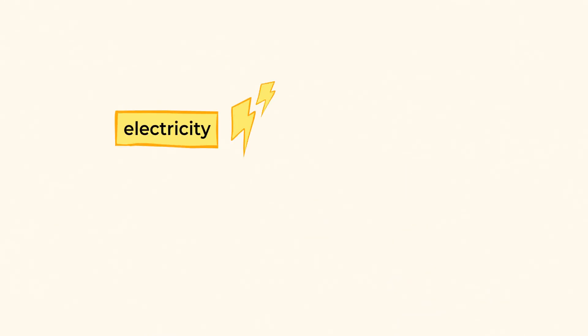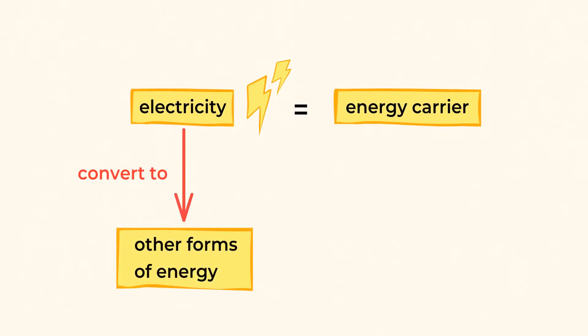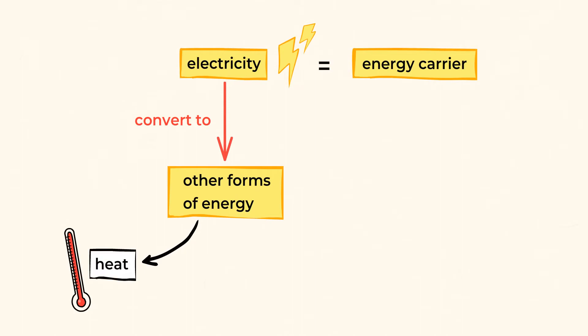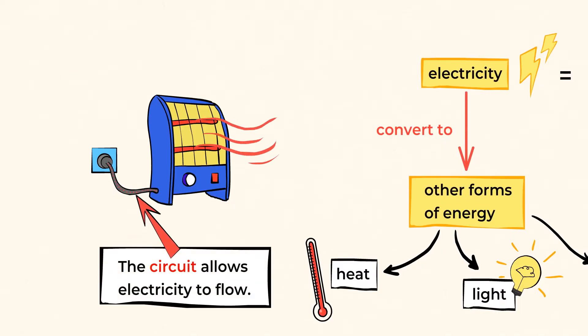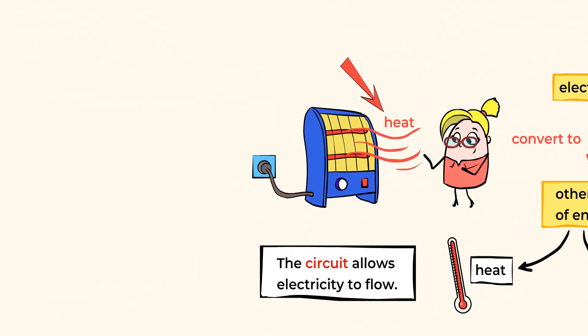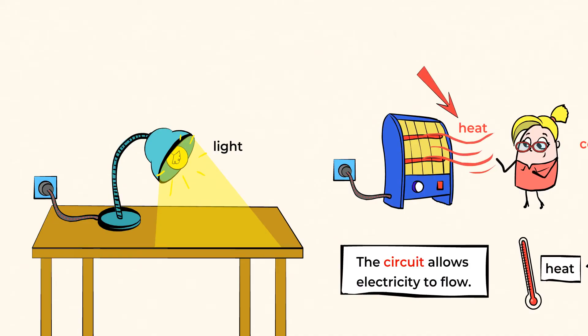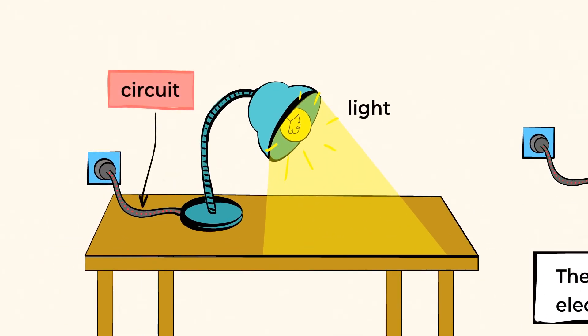Electricity is also known as an energy carrier, which means it can be converted to other forms of energy, such as heat, light, and even sound. For example, once you plug in your electrical heater and turn it on, you create a circuit which allows electricity to flow, and then you get heat as a result. Or maybe you plug in your lamp and turn it on, creating a circuit which allows electricity to flow, and you get light as a result.